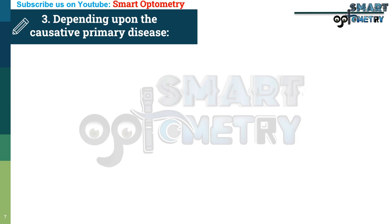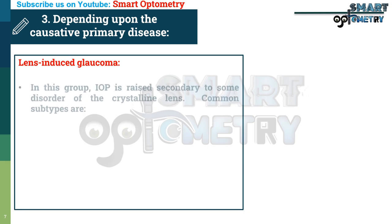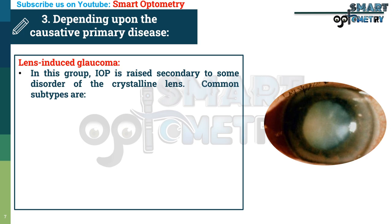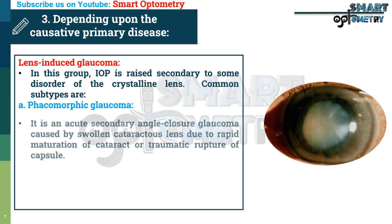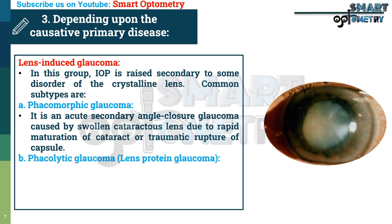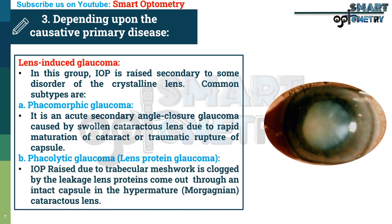Depending upon the causative primary diseases: 1. Lens-induced glaucoma — IOP is raised secondary to some disorder of the crystalline lens. Common subtypes are: a. Phacomorphic glaucoma — an acute secondary angle closure glaucoma caused by a swollen cataractous lens due to rapid maturation of cataract or traumatic rupture of the capsule. b. Phacolytic glaucoma — IOP is raised because the trabecular meshwork is clogged by lens protein leaking through an intact capsule in a hypermature cataractous lens.